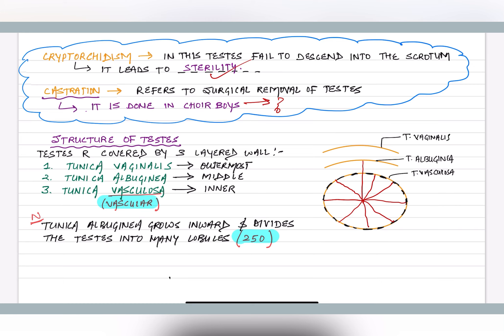Regarding the structure of the testis: testis has three layers — the outermost is tunica vaginalis, the middle is tunica albuginea, and the innermost is tunica vasculosa. The middle layer, tunica albuginea, grows inward and divides the testis into many lobules — 250 lobules as per NCRT data.